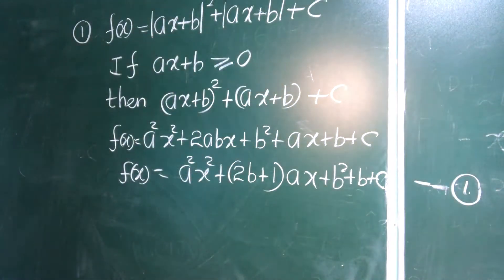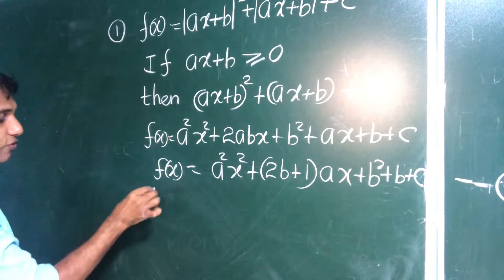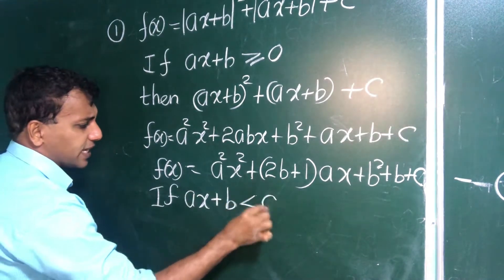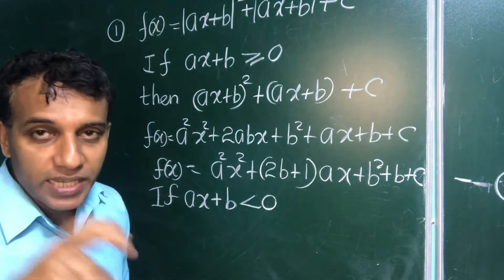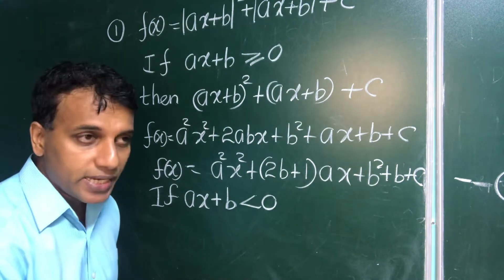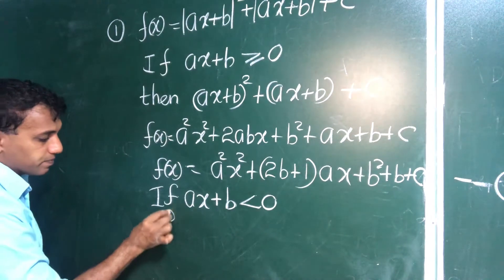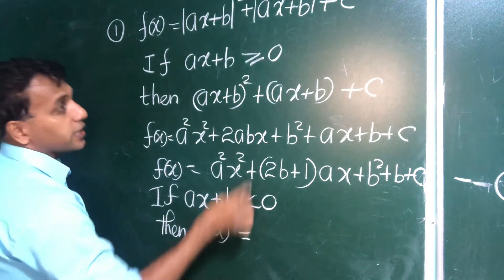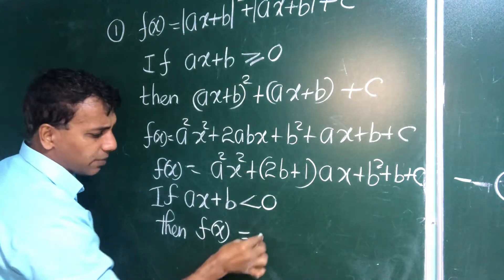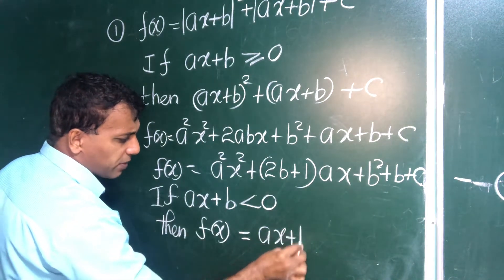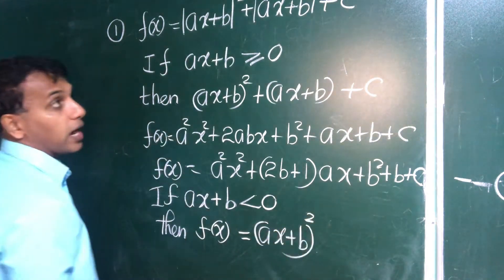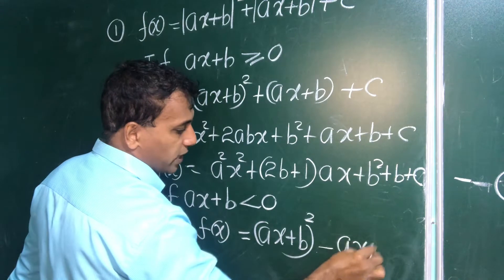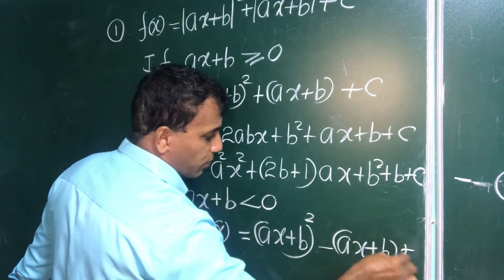Case two: if ax plus b is less than zero, the modulus symbol introduces a minus sign inside. So f(x) uses the complete square (ax + b) squared — which is always positive — but the linear term gets a minus: minus (ax + b), so we write minus ax plus b, plus c.